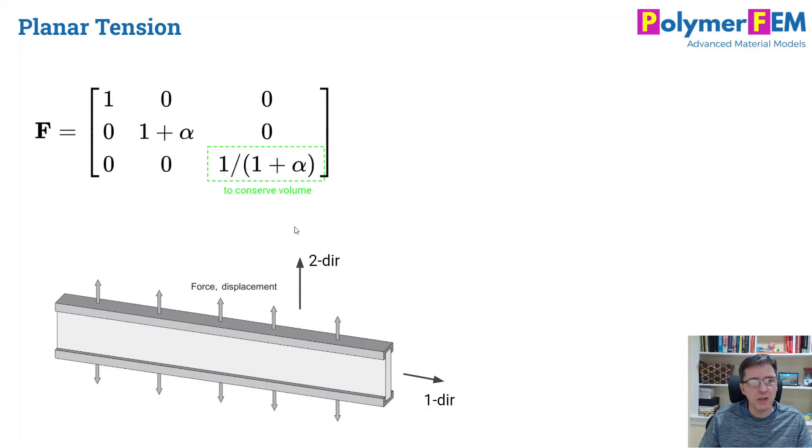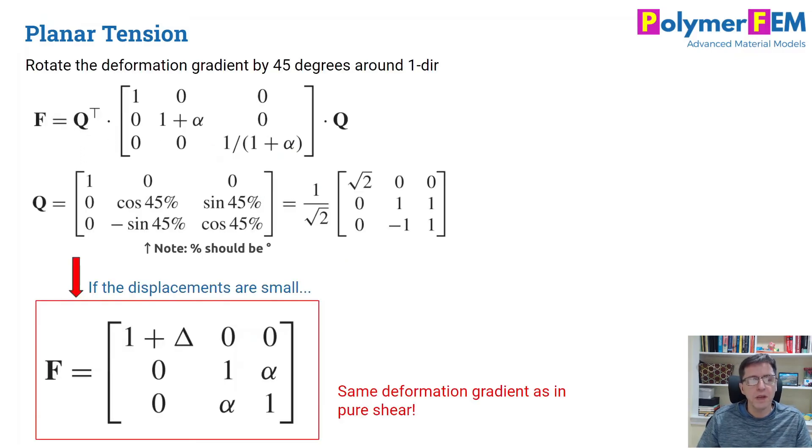How about planar tension? Planar tension has this deformation gradient here. How do we work with this planar tension deformation gradient and demonstrate that it's somehow similar to pure shear? Well, this is how you do it. You take the deformation gradient and you rotate it. So the planar tension deformation gradient, you apply a 45 degree rotation around the one axis. And if you do that, you have to introduce the rotation tensor Q, and it's written right here. You perform a little bit of math. You can do this in Julia or some other math package.